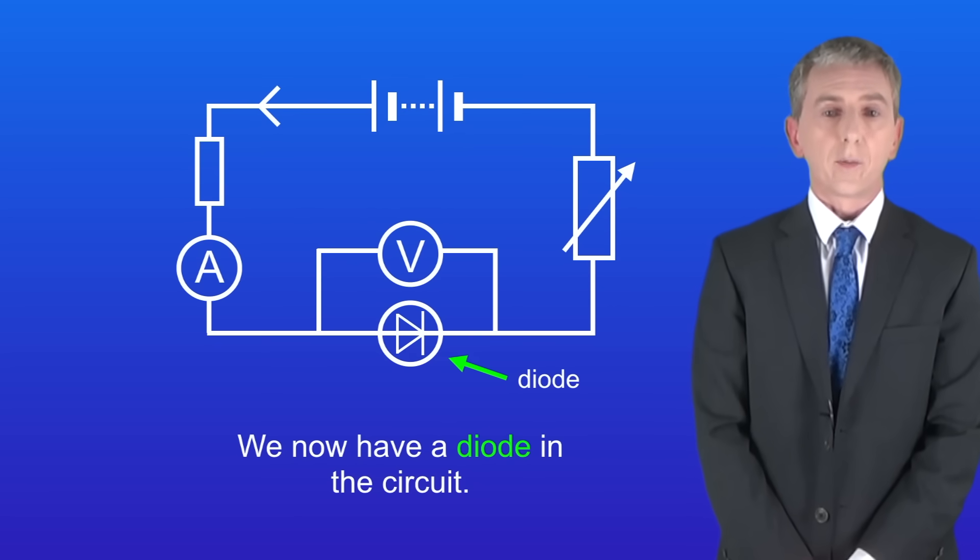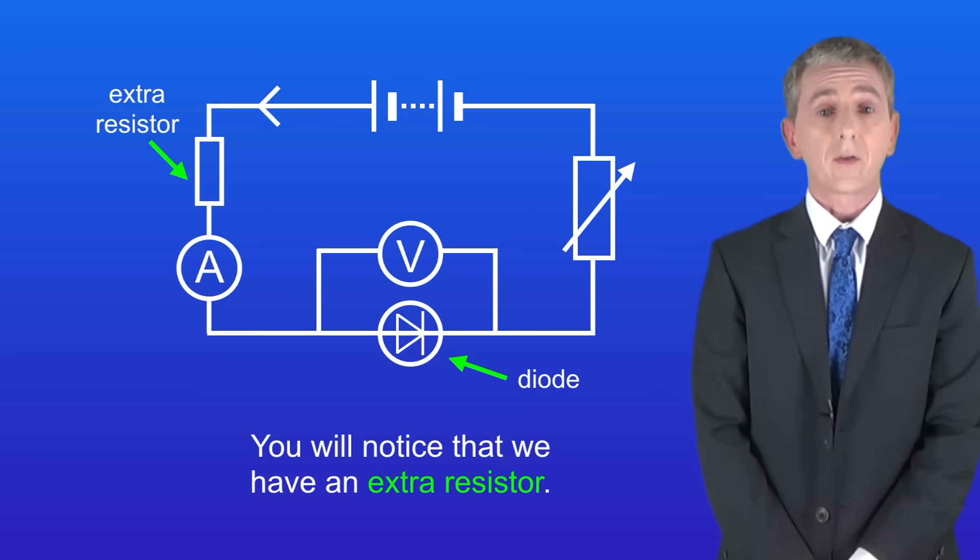Okay, we're now going to do the experiment using a diode. I'm showing you the circuit here. As you can see we now have a diode in the circuit and you'll notice we also have an extra resistor.